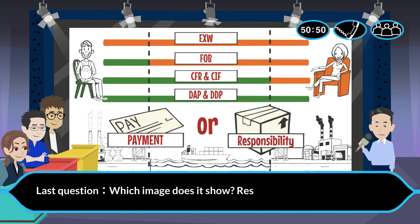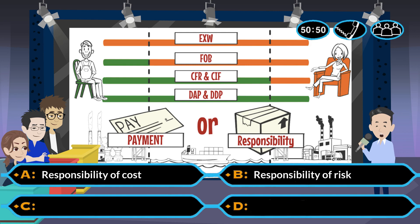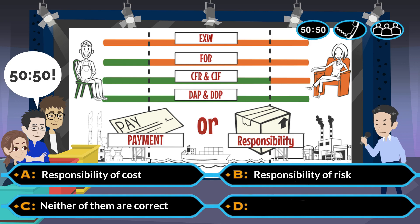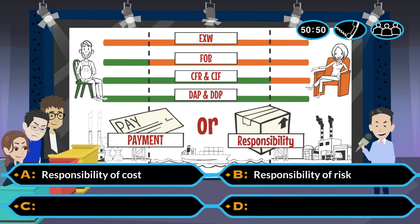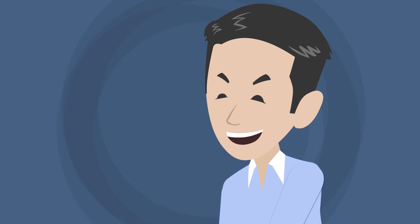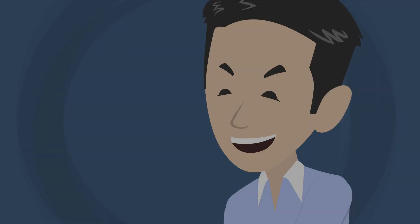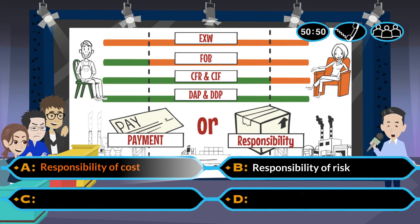Which image does it show — responsibility of cost or risk? This is three multiple choices. A. Responsibility of cost, B. Responsibility of risk, C. Neither of them are correct. Now it's 50-50. Choice C will disappear. The answer is A. Responsibility of cost.